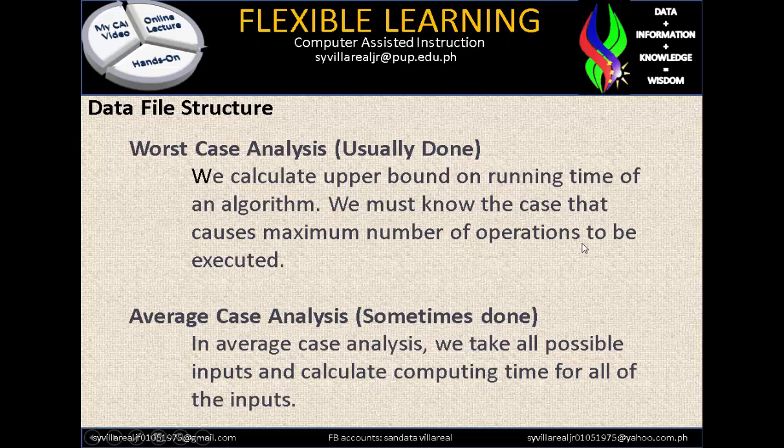Next, average case analysis is sometimes done. We take all possible inputs and calculate computing time for all of them. This means you do the work but there is no consistency — you may need to find something that is already in front of you. We have plenty of average cases in terms of percentage, more than worst case and best case.